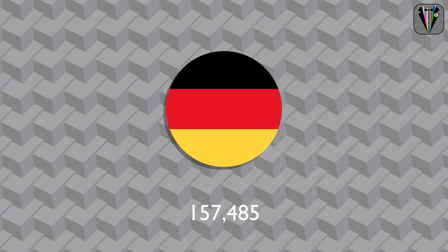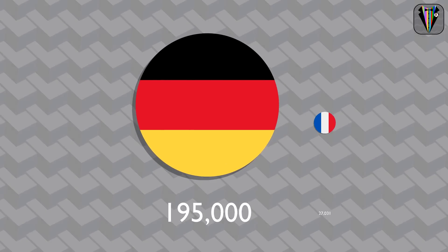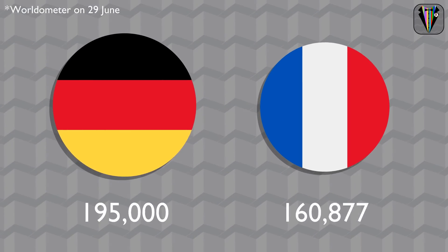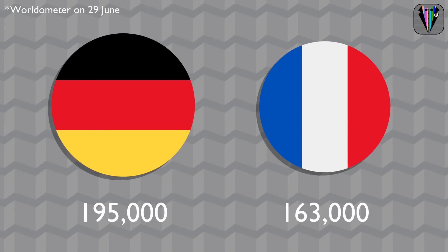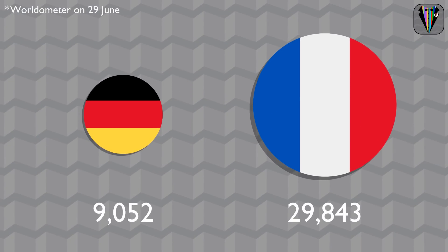For example, Germany recorded nearly 195,000 infections, more than France with 163,000. But as regards the number of deaths, the situation is completely reversed, since France has about three times the number of deaths in Germany.